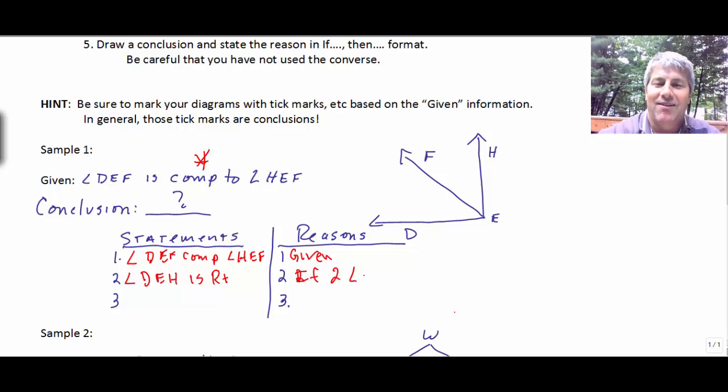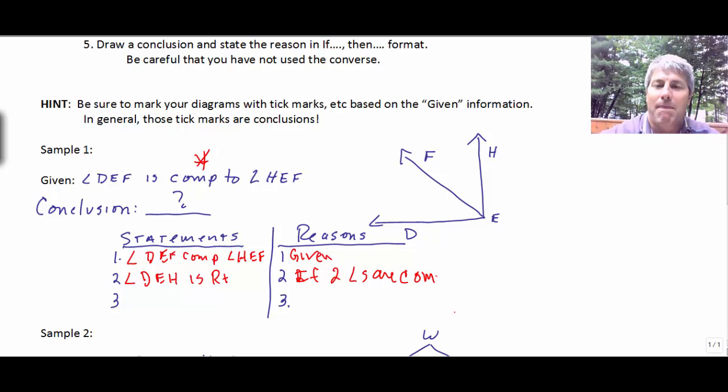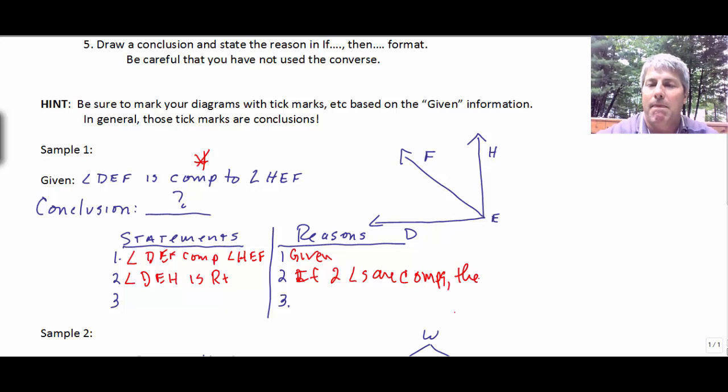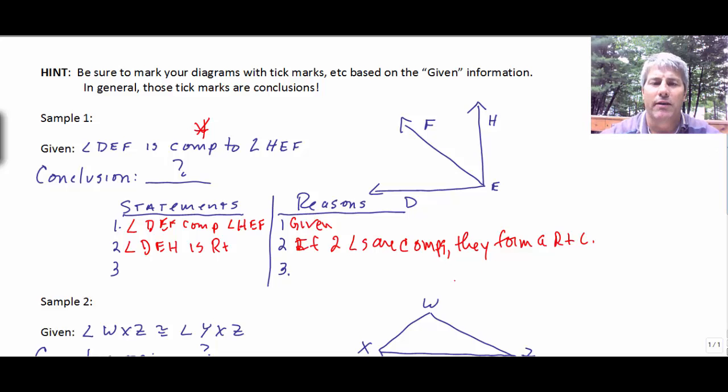If two angles are complements, then they form a right angle. So, another conclusion could be angle DEF is 90 degrees. And we would do the same thing. If two angles are complementary, then their sum is 90 degrees. So, that would be the other conclusion that we could draw there.